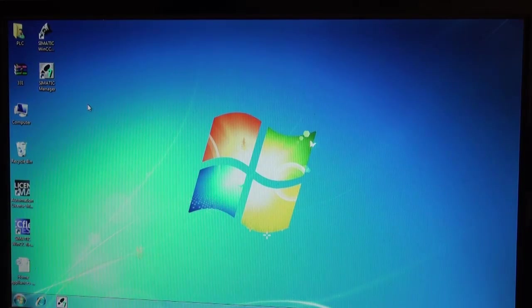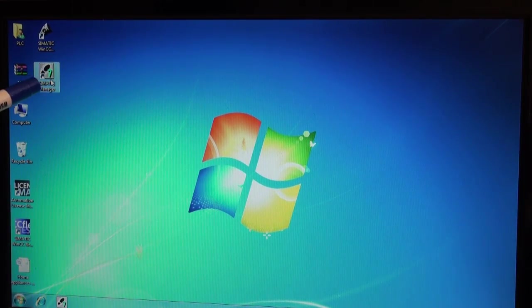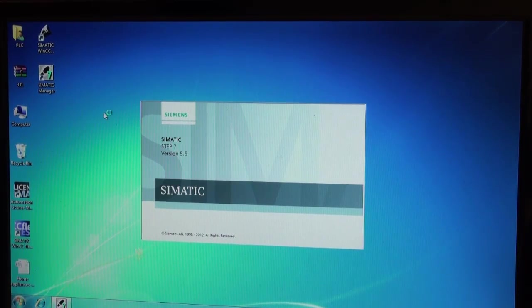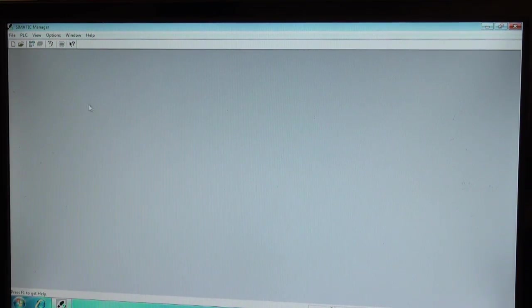As mentioned in the task earlier, we have to open the software SIMATIC manager. Then we need to check the communication between PLC and PC using accessible nodes. Here we have the option for accessible nodes. Just click on that.